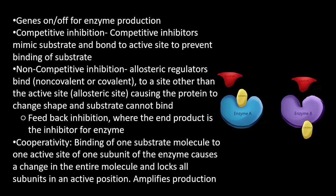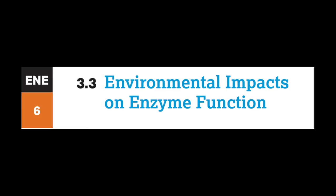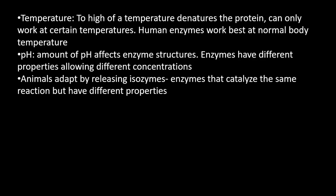Two major environmental impacts on enzyme function are temperature and pH. If temperature is too high, it will denature the protein — each enzyme works best at certain temperatures, which is why the body regulates temperature through homeostasis. Similarly, too much or too low pH can also cause enzymes to denature, making them non-functional.